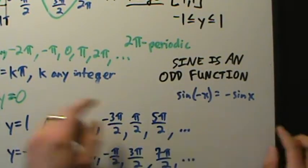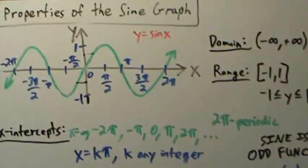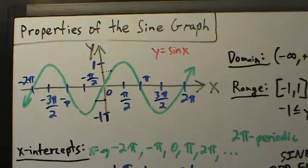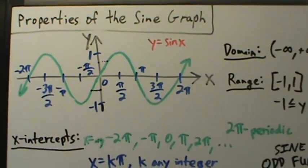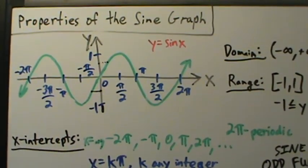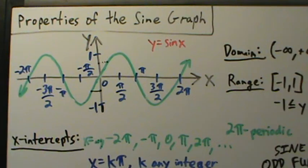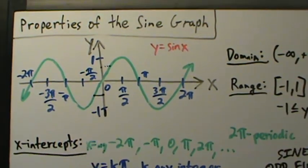So odd functions are symmetric over the origin and have the algebraic property sine of negative x equals negative sine of x. Those are some properties of the graph of the sine function. Coming up next: some corresponding properties for the cosine graph.